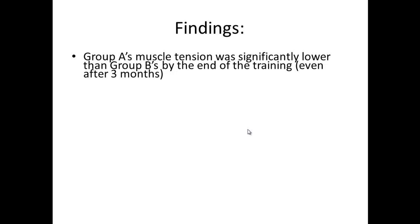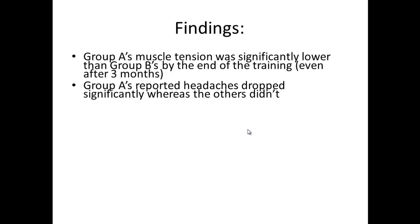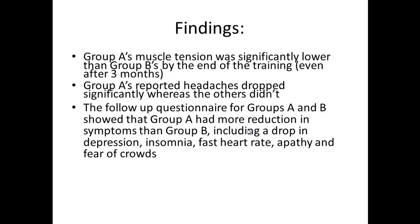Group A's muscle tension was significantly lower than Group B's by the end of training, and this was maintained even after three months. Group A's headaches also significantly reduced, whereas neither of the other two groups showed any change. Group A also showed a reduction in symptoms of other conditions, including a drop in depression, a drop in insomnia, lower heart rate, lower apathy, and reduced fear of crowds. So it didn't just affect headaches - it had a positive impact on various other things related to anxiety, tension, and stress.